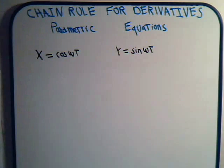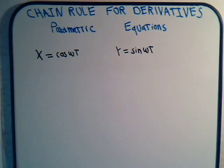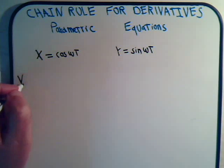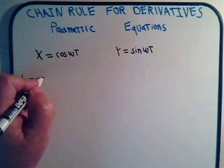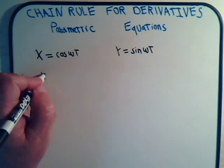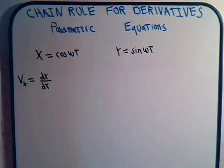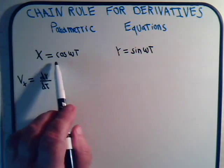This particle would also have, for its velocity, an x component and a y component. We're going to figure those out very easily. The x component of velocity, vx, that's just dx/dt. And that will be equal to — we take the derivative of this.